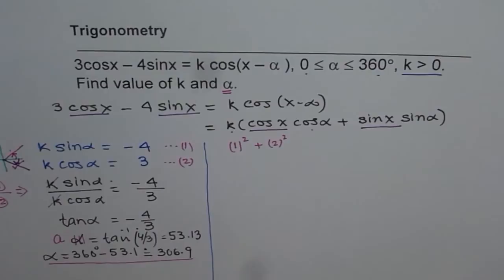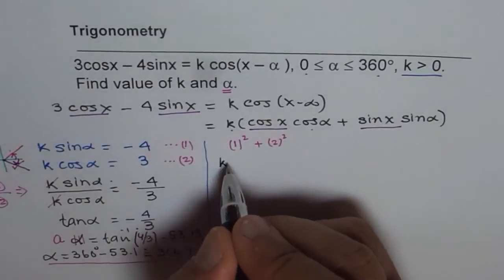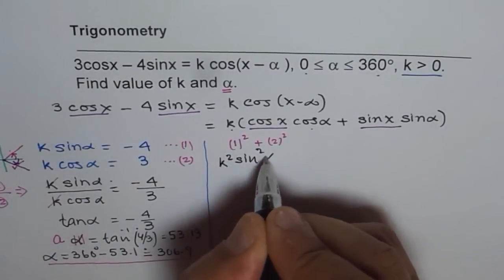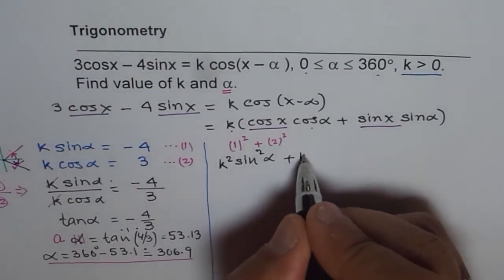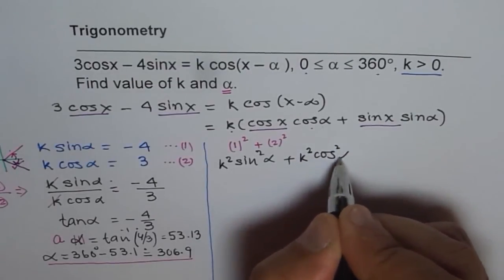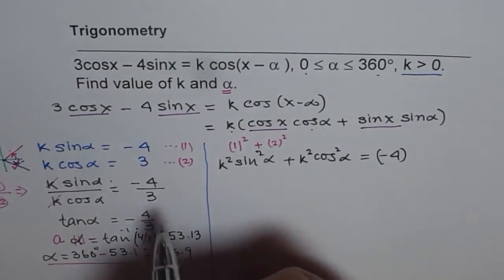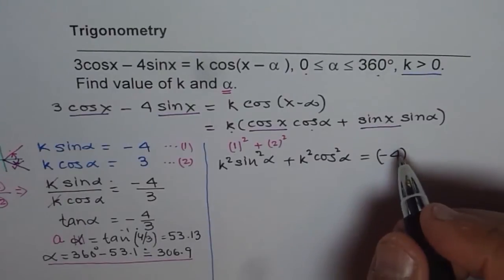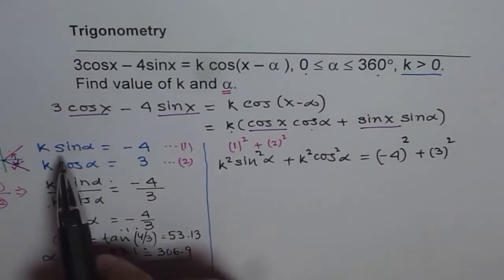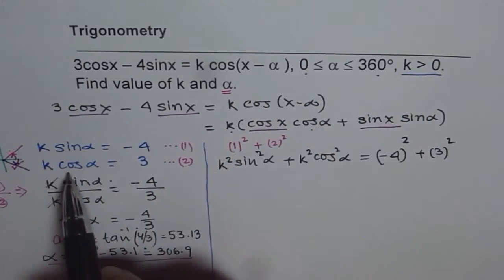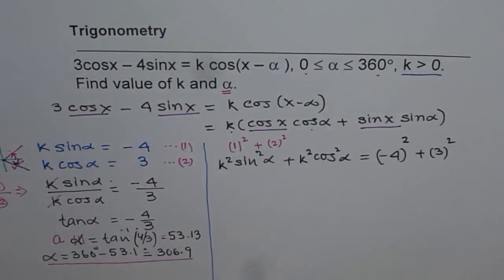This is what we will do now, to find the value of k. So if you square this, what do you get? You get k square sine square alpha, plus k square cos square alpha. On the other side, we get minus 4 square. So first you square and then add. Don't add and square. There is a difference in two. Now this, plus 3 square. So first we square these. So let's say we get equation 3. We square the second equation. We get equation 4. And then you add them up. So that is the process.